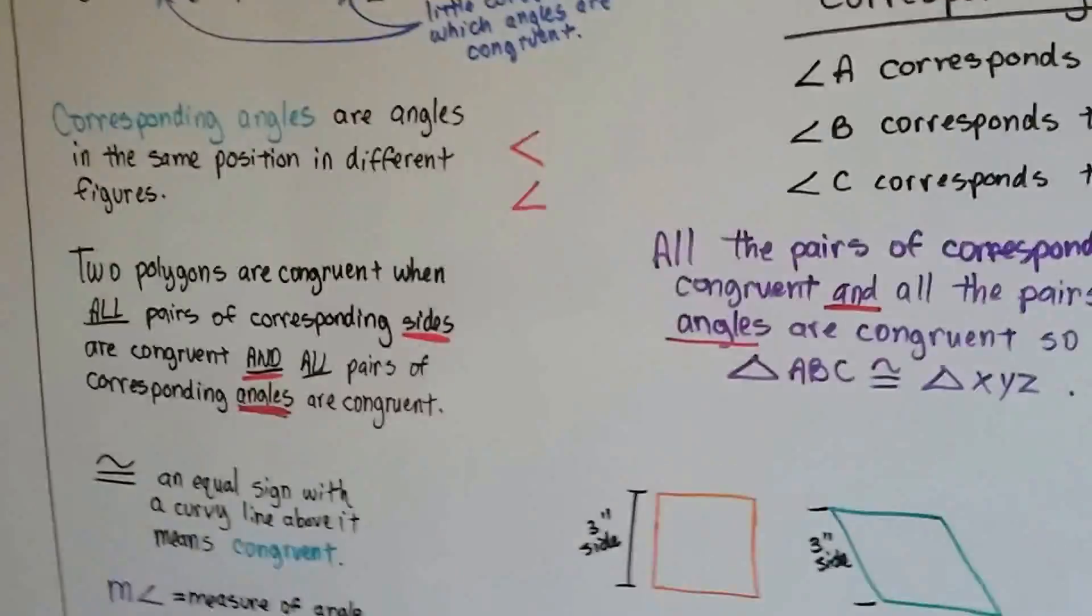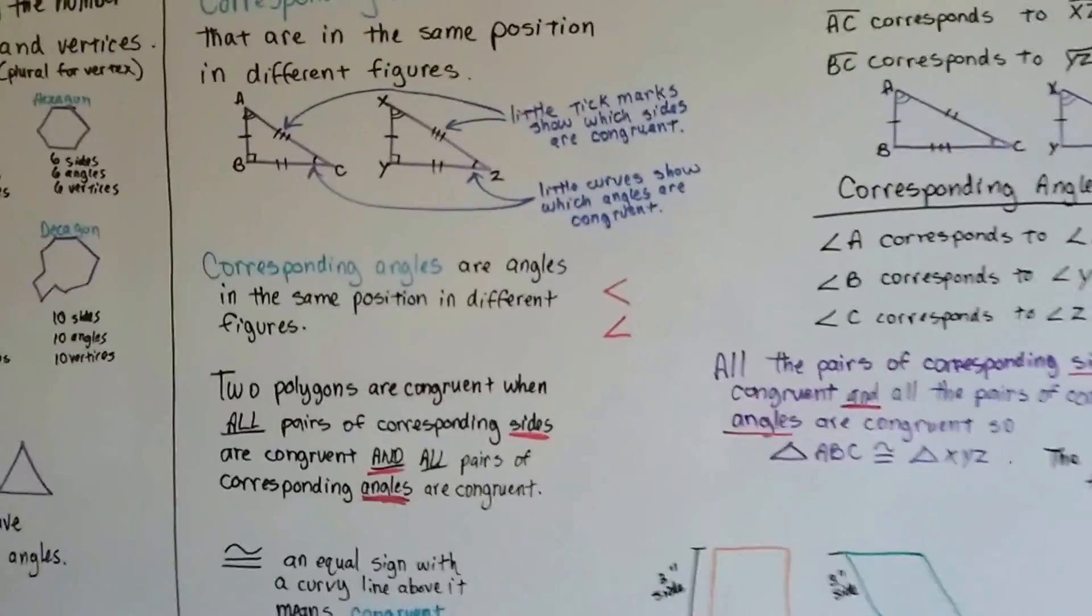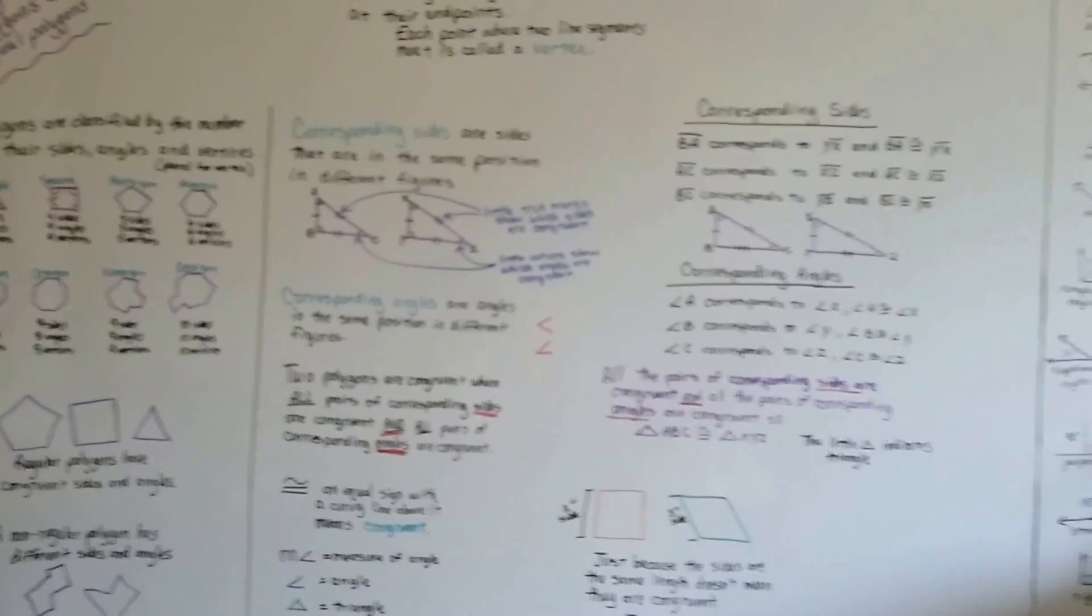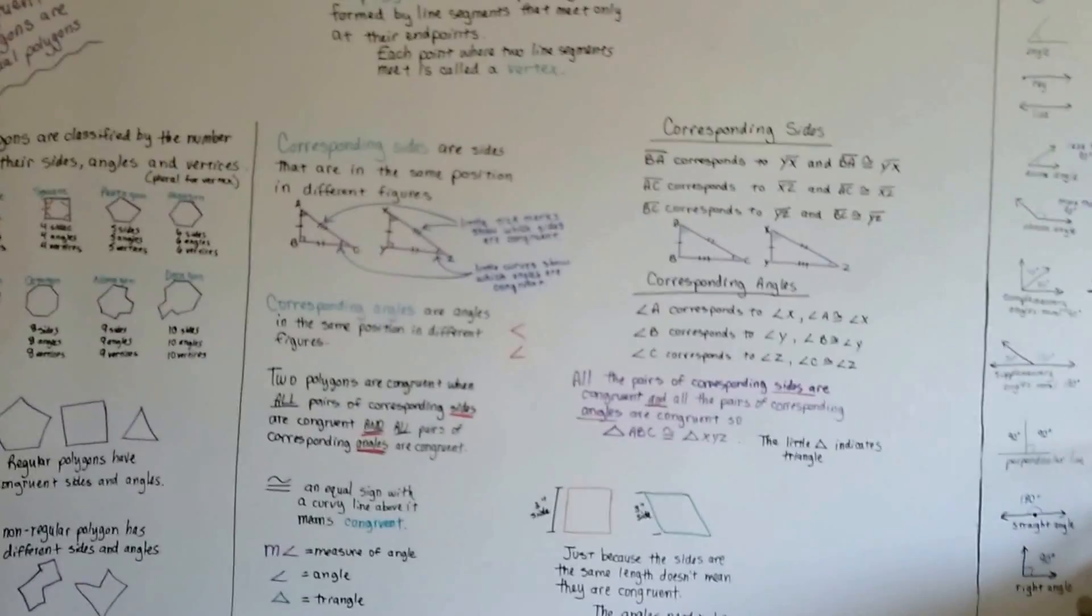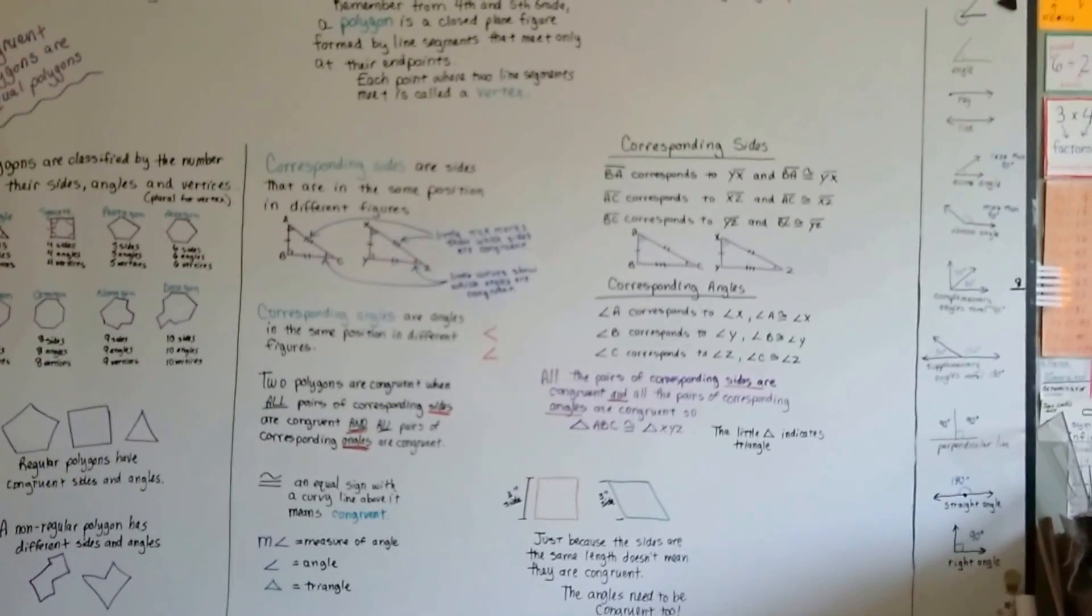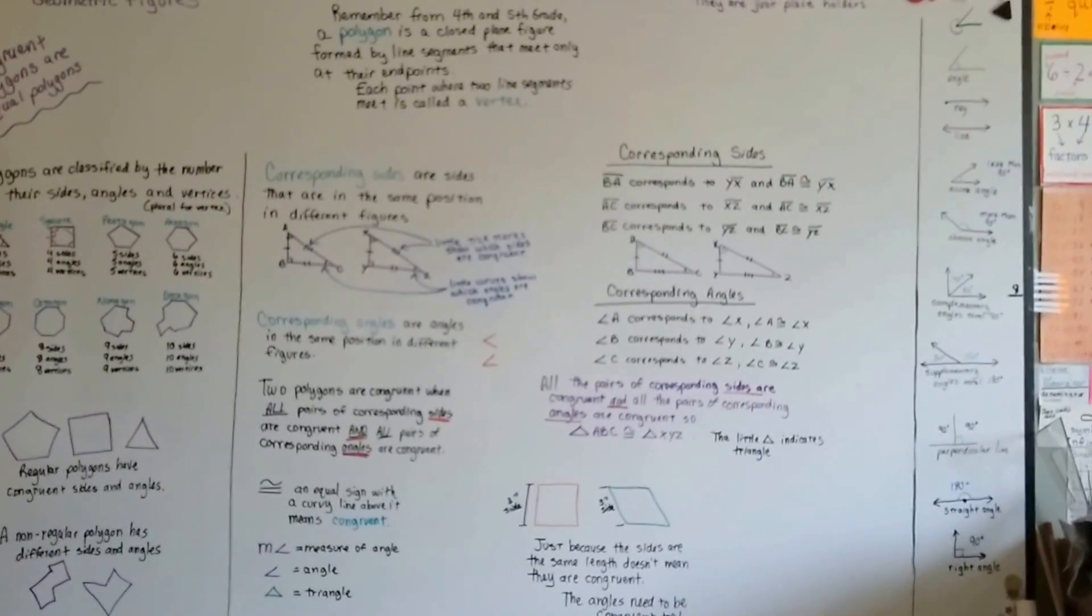So that's congruent polygons that are equal polygons. So now you know how to tell if they're equal or congruent, right? No big deal. You can do this, right? We'll keep moving forward and I'll see you in the next video. Bye.